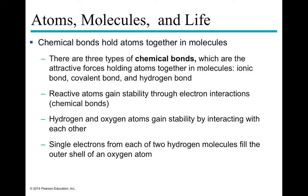There are three types of chemical bonds. The two major types are ionic bonds — where atoms transfer electrons — and covalent bonds — where atoms share electrons. The third type is the hydrogen bond, which is specific to water and hydrogen interactions.